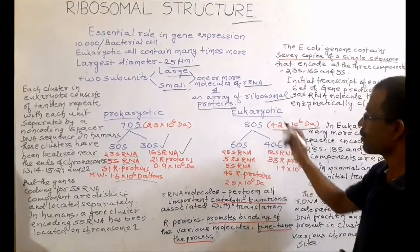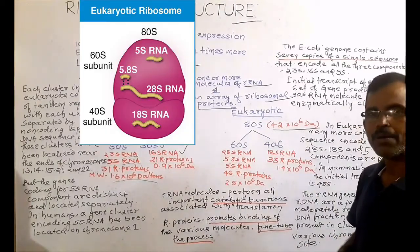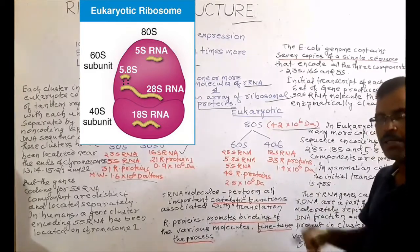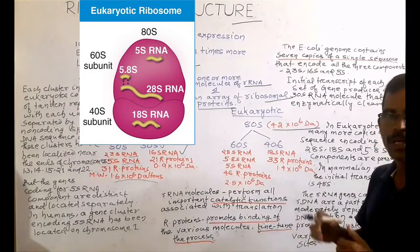Next, eukaryotic ribosome. The eukaryotic ribosome is 80S. It is also composed of two unequal subunits.